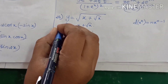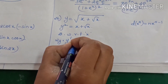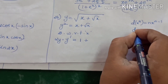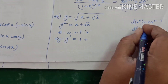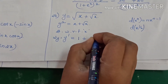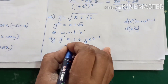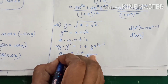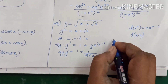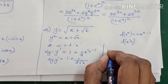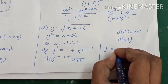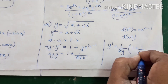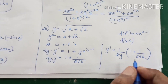Continuing: into y, differentiating 1 gives y dash. The right side: differentiating x gives 1; differentiating √x (i.e., x^(1/2)) gives (1/2) x^(1/2 − 1). So 2y · y dash equals 1 plus 1 divided by 2√x. Therefore y dash equals 1 divided by 2y, into (1 + 1/(2√x)).